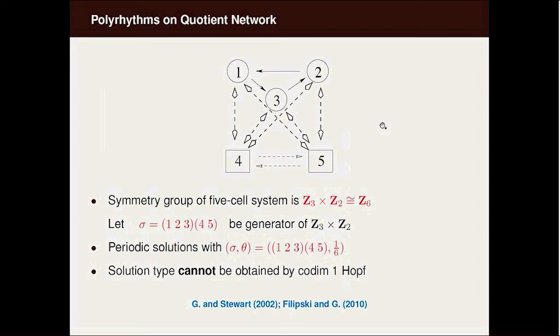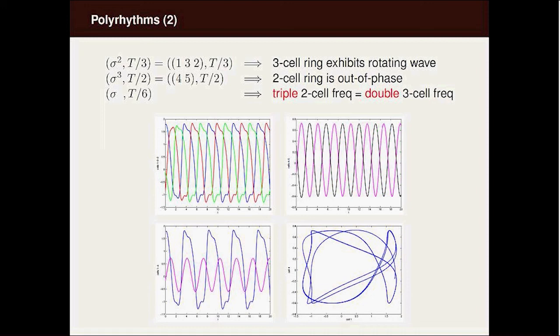If you take the generator of Z6, which is just the three cycle coupled with the two cycle, then you can ask, are there periodic solutions which have this six cycle with a one sixth period phase shift? The answer is yes, there do exist such things. They're rigid. They cannot be obtained by Hopf bifurcation, an interesting point.